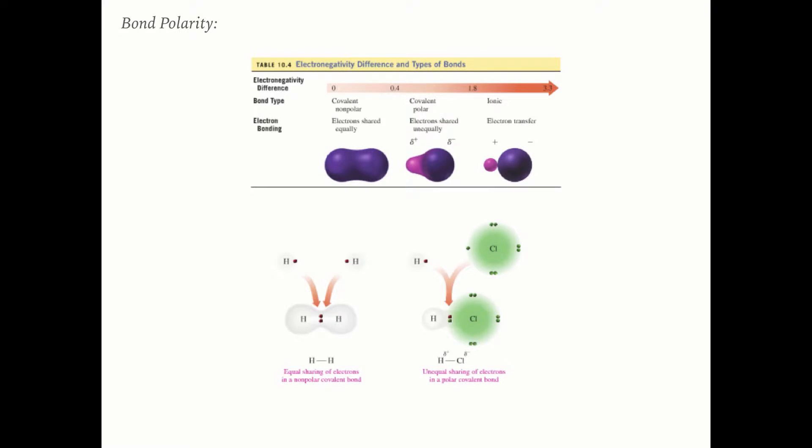Bond polarity helps us determine if a bond is polar or nonpolar. If a bond is nonpolar, the two elements sharing electrons in the covalent bond have the same electronegativity — zero difference — so they share electrons equally. If there is a slight difference, like hydrogen and chlorine, chlorine is more electronegative and will hog the electrons towards it, making that bond polar.